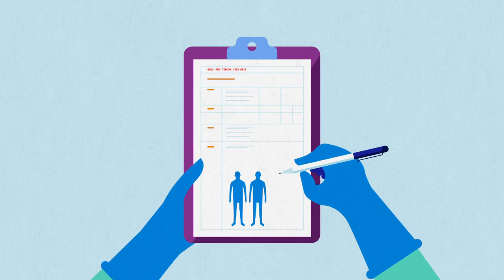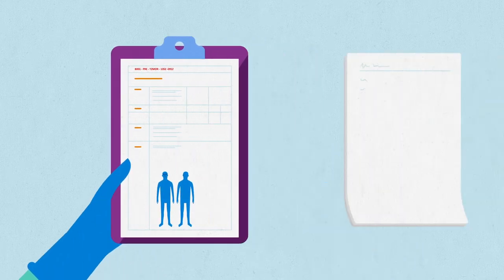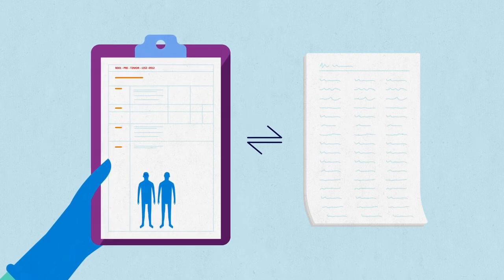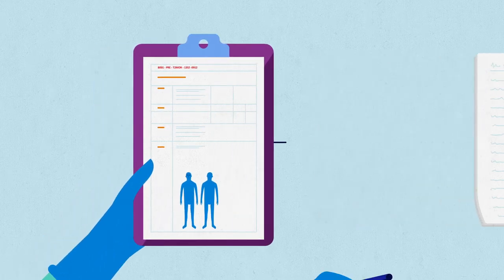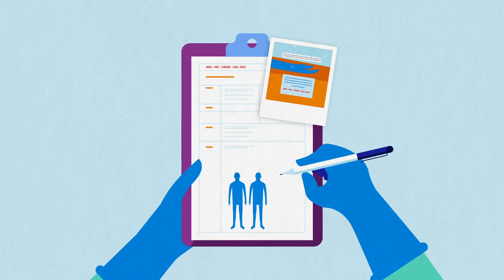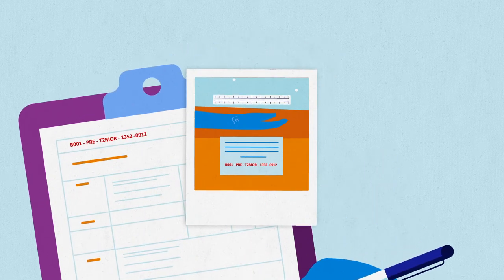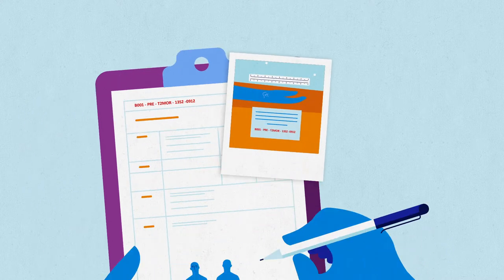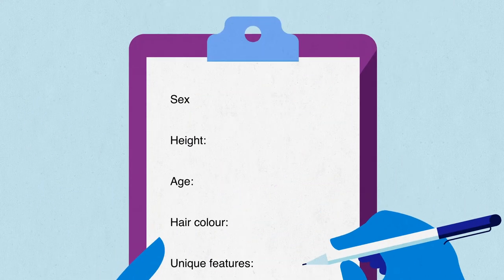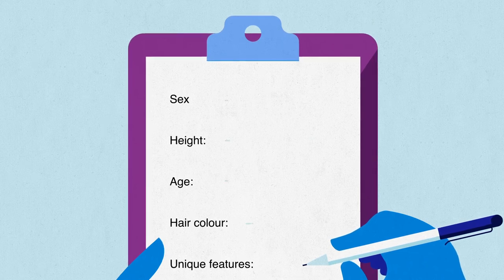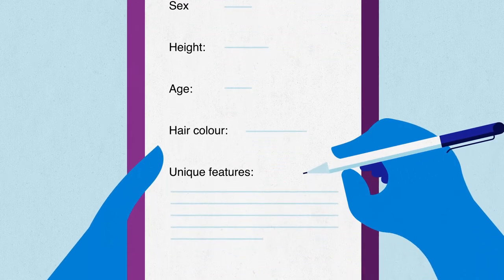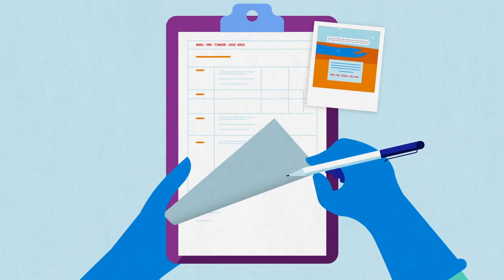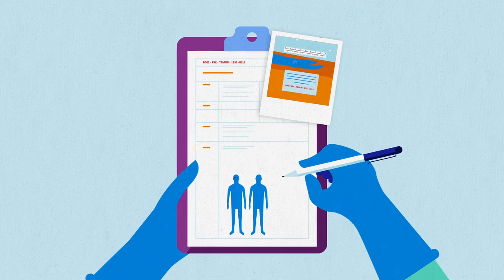A dead body information form should be used to collect data, which can be matched with information about those missing or presumed dead. Other general and unique features should be collected, including the feature's details, specific location on the body, and colour, shape or size. A person should also be assigned to record vital info like sex, height, age, hair colour, and any distinctive marks on a dead body information form.